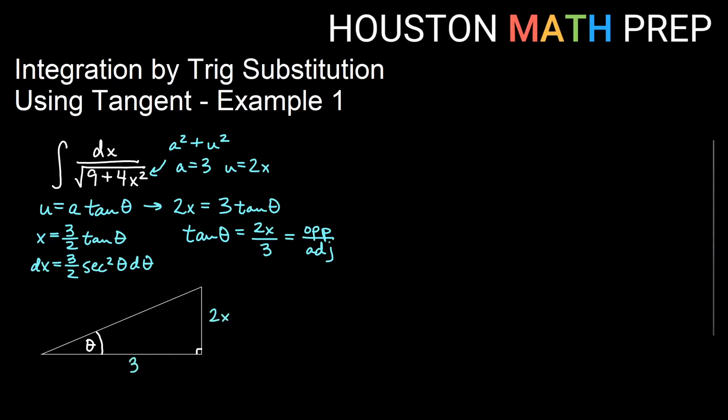Then using the Pythagorean theorem, this squared plus this squared equals this squared, so I can figure out that this side will be the square root of 9 plus 4x squared.